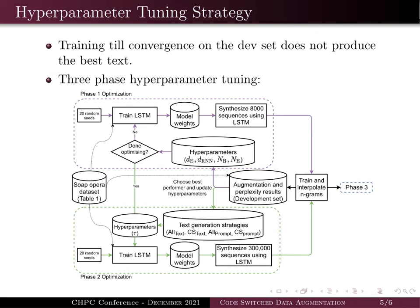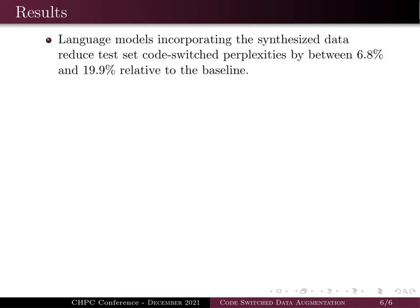In the final phase three, we utilize the out-of-domain monolingual corpora to obtain final augmented n-grams. We found that our language models which incorporated the synthesized data reduced test set code-switch perplexity — measured directly over code switches — by between 6.8 and 19.9 percent relative to the baseline.